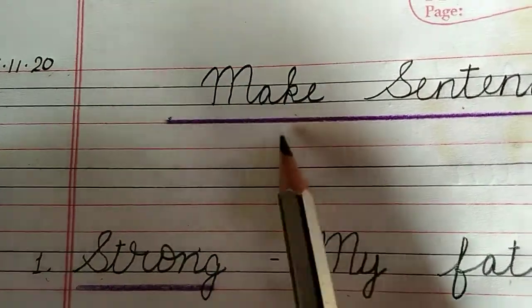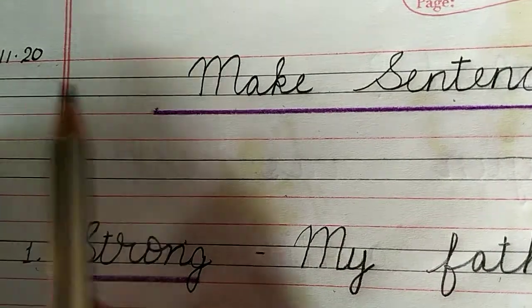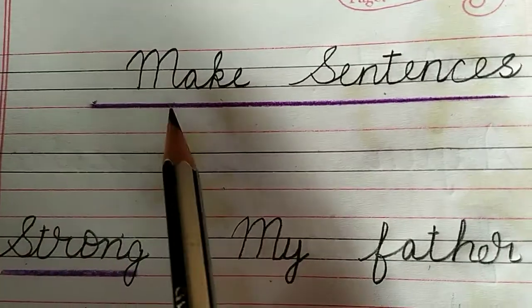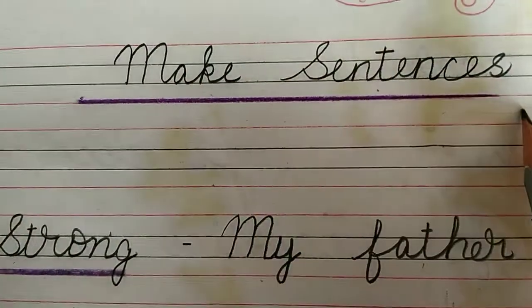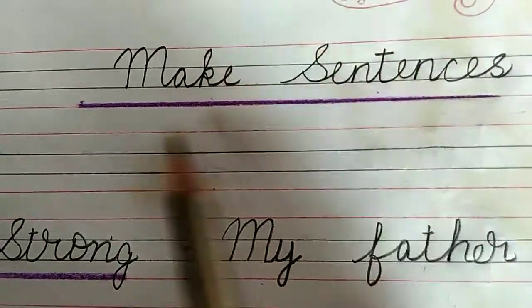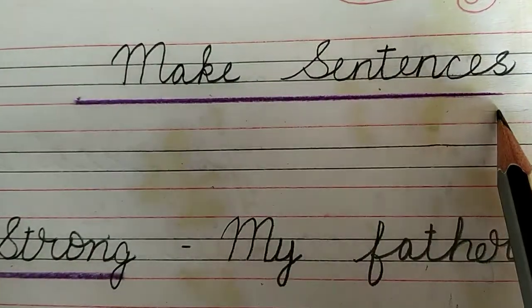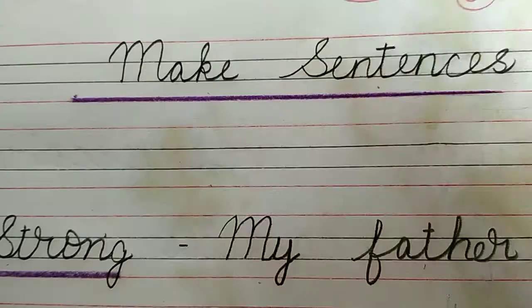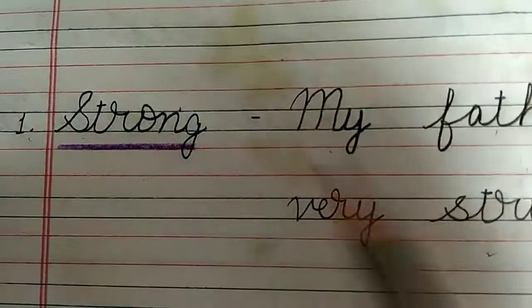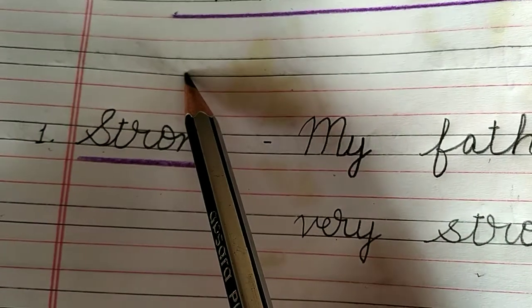Write down today's date and heading: Make Sentences. Draw the blue pencil line over here, then leave one line.